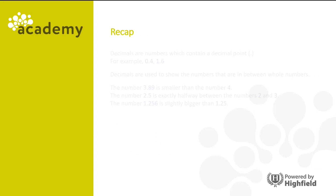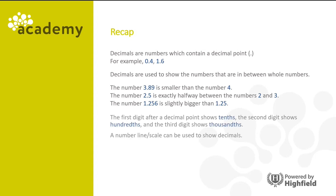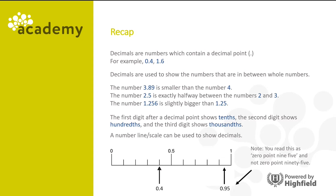So let's recap. Decimals are numbers which contain a decimal point, for example 0.4 and 1.6. Decimals are used to show the numbers that are in between whole numbers. The number 3.89 is smaller than 4, 2.5 is exactly halfway between 2 and 3, and 1.256 is slightly bigger than 1.25. The first digit after a decimal point shows tenths, the second shows hundredths, and the third shows thousandths. A number line or scale can be used to show decimals, and remember we need to read 0.95 correctly.